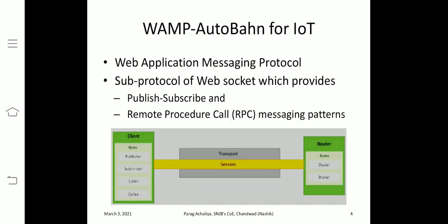The first architecture we will see is WAMP — Web Application Messaging Protocol. It is a type of protocol used for messaging over the internet in different web applications. With this protocol, messages can be transferred from one application to another over the internet. WAMP is a sub-protocol of WebSocket, which provides two models: the publish-subscribe model and the remote procedure call (RPC) messaging platform.